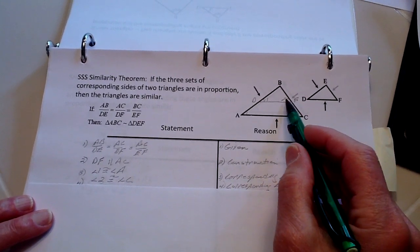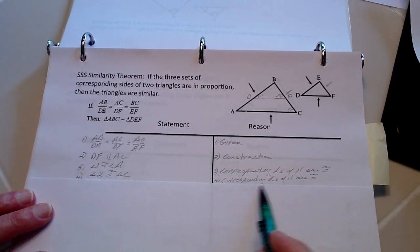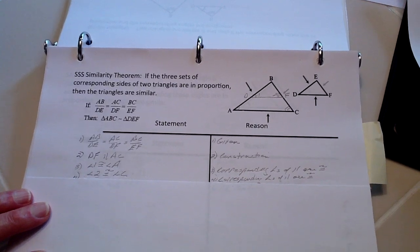And the same case is here: angle two and angle C are going to be congruent because they are corresponding angles of parallel lines.